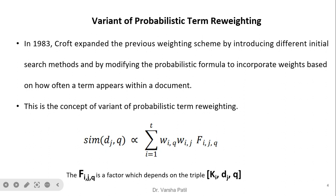The variant of probabilistic term reweighting: in 1983, Croft expanded the previous weighting scheme — the probabilistic model — by introducing different initial search methods and modifying the probabilistic formula to incorporate weights based on how a term appears within a document. The similarity formula between a document and a query is: summation from 1 to t of w_iq * w_ij, where these are binary indicators for keyword presence in both document and query, multiplied by a new measure f_ijq.